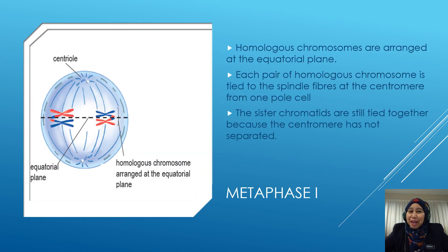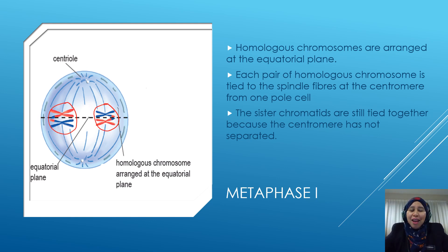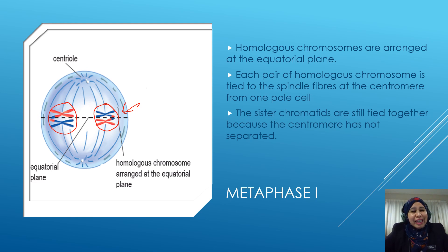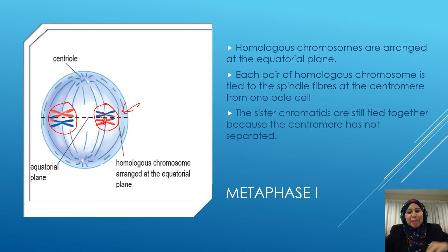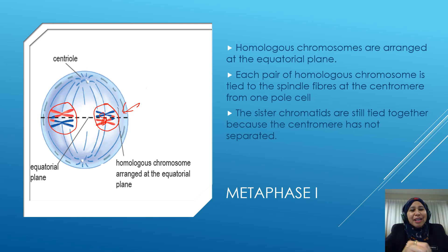The next stage is metaphase 1. During metaphase 1, homologous chromosomes are aligned at the equatorial plane, which is an imaginary line at the center of the cell. Each pair of homologous chromosomes is tied to the spindle fiber at the centromere. The sister chromatids are still tied together because the centromere has not yet separated, as you can see in the diagram.